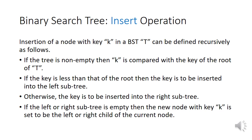The next operation we perform on a binary search tree is the insertion operation. Let us consider a binary search tree in which we will insert a new node at a proper position. Insertion of a node with a key K in a BST can be defined recursively as follows: if the tree is non-empty, then K is compared with the key of the root. If the key is less than that of the root, then the key is to be inserted into the left subtree; otherwise, into the right subtree. If the left or right subtree is empty, then the new node with key K is said to be the left or right child of the current node.